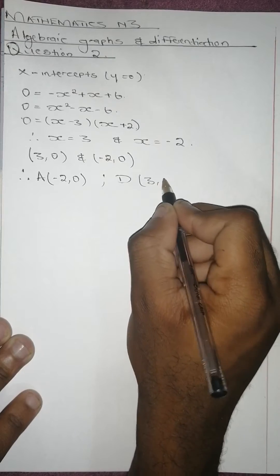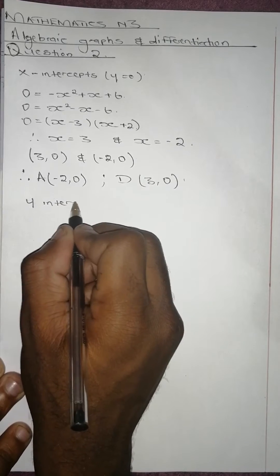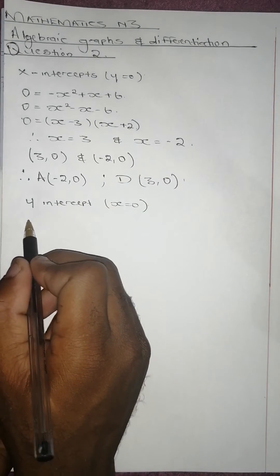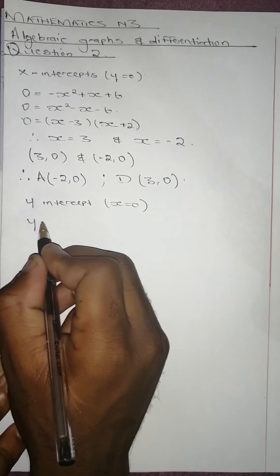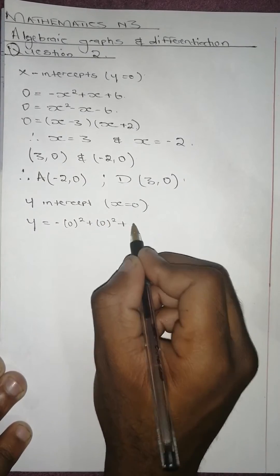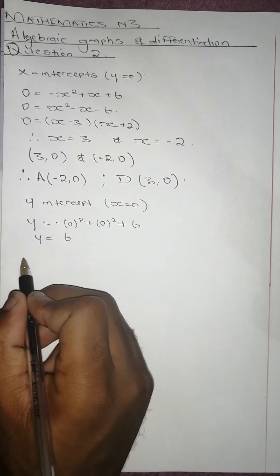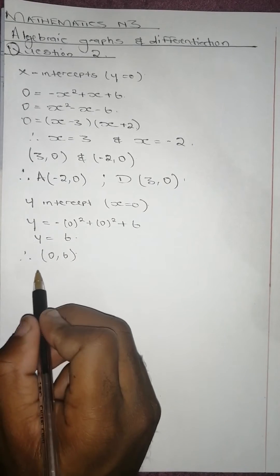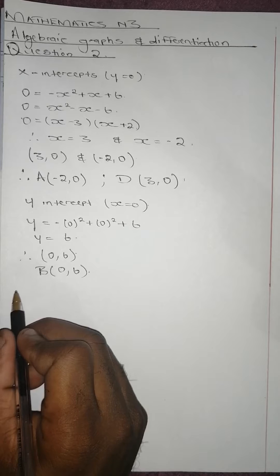So point A will be (-2, 0) and point D will be (3, 0). Then we find the y-intercept, where x = 0. Substituting x = 0 into the equation y = -x² + x + 6, we get y = 0 + 0 + 6 = 6. So point B is (0, 6).